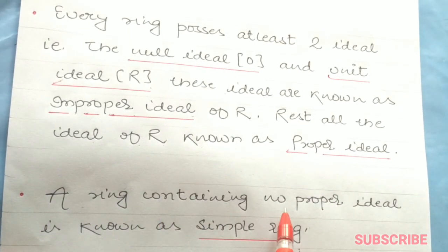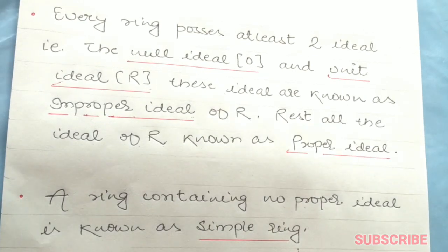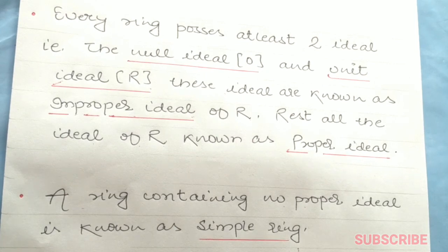A ring containing no proper ideals is known as a simple ring. If you have a ring that contains no proper ideals, then we say simple ring.